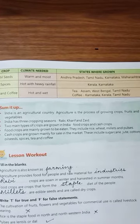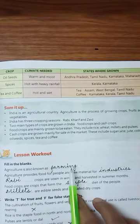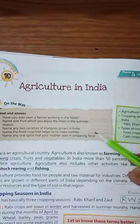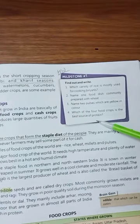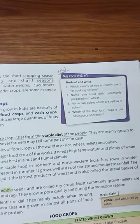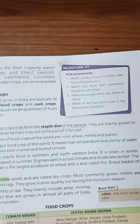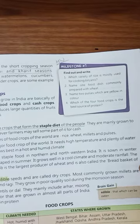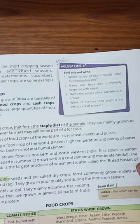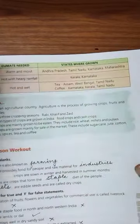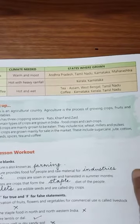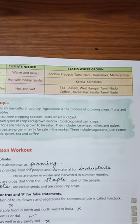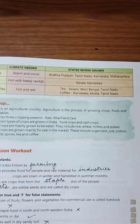Children, just read the chapter once again, and in the next video we will discuss the question answers and other exercises. This is the homework for you — you need to fill in the exercises on your own and learn the brain gain section too. Important questions that are often asked: Name the three cropping seasons in India, or what is the difference between Rabi and Kharif crops? With this we wind up this lesson. Next week we will do the other exercises. Revise it at home. Thank you so much.